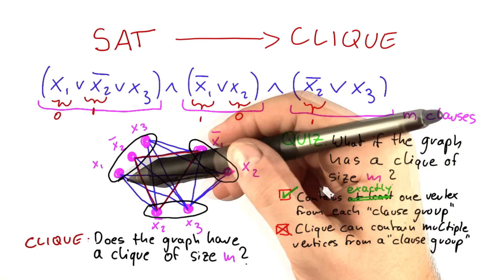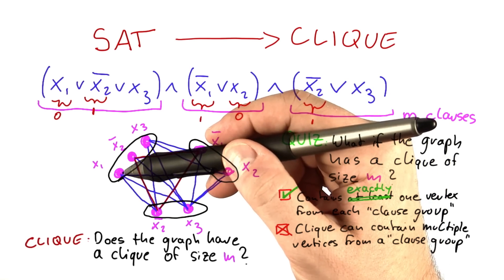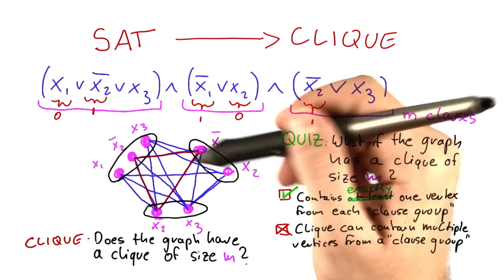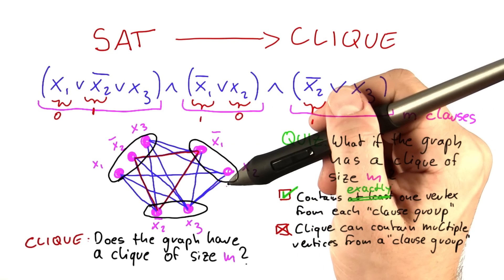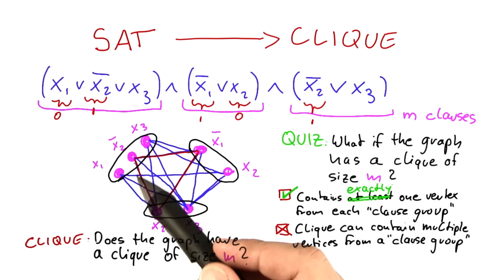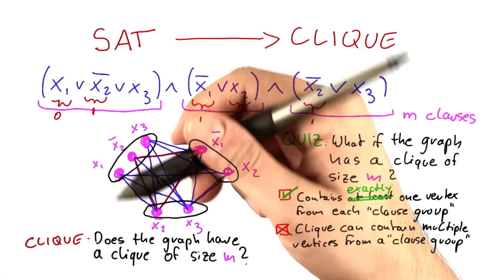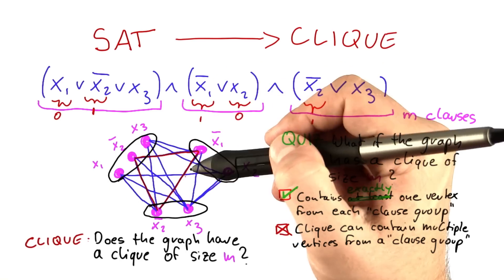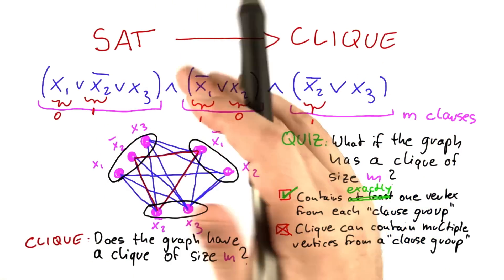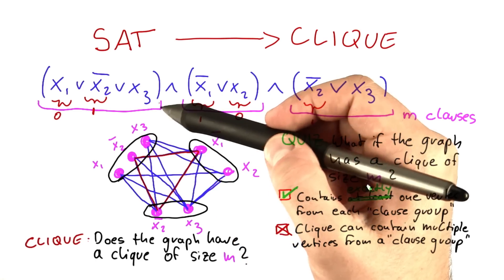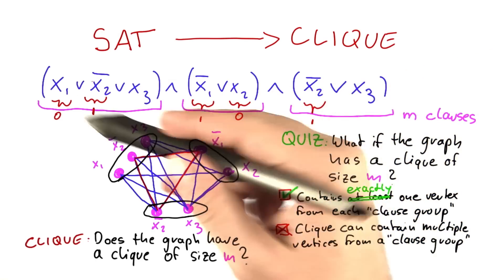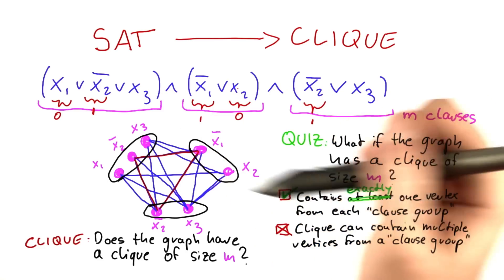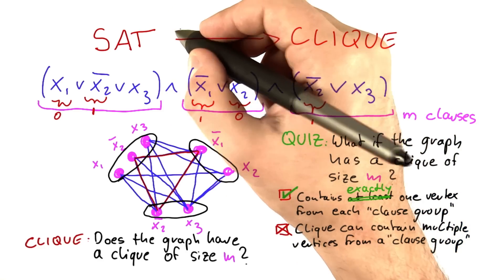And that means, due to the way we constructed the graph, that every vertex has a conflict with another vertex in the clique. So if there's no large clique, this means that every assignment of true and false to the variables will lead to a conflict such that at least one of the clauses cannot be satisfied. So then the Boolean formula does not have a satisfying assignment.